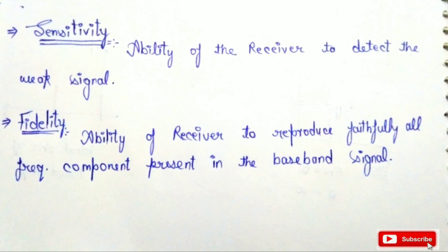The next property of the receiver is sensitivity. Sensitivity is the ability of the receiver to detect a weak signal. For example, the average distance for FM radio is 100 km. If a weak signal is coming from a distance of 100 km, a good receiver must have the ability to detect that weak signal. For a good receiver, sensitivity should be high, and this property is provided by the IF amplifier.